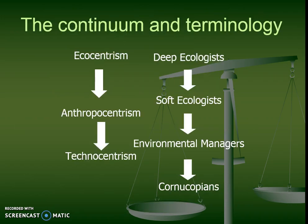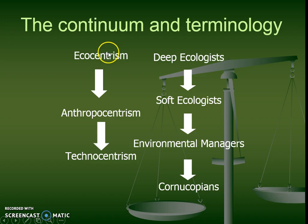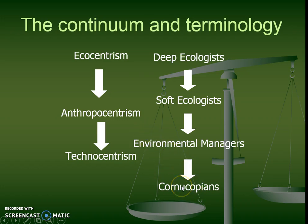This is a spectrum: ecocentric is the most nature-oriented, anthropocentric is in the middle, and technocentric is at the far end. There are also subcategories. Deep ecology is extreme ecocentric — those people are more likely to live in the woods and try to stop trucks from bulldozing trees. Soft ecologists are a middle ground, being ecocentric in some ways and anthropocentric in others. Environmental managers fall between anthropocentric and technocentric, using technology to manage the environment. Cornucopian is the most extreme version of technocentric — very controlling and very future-oriented.